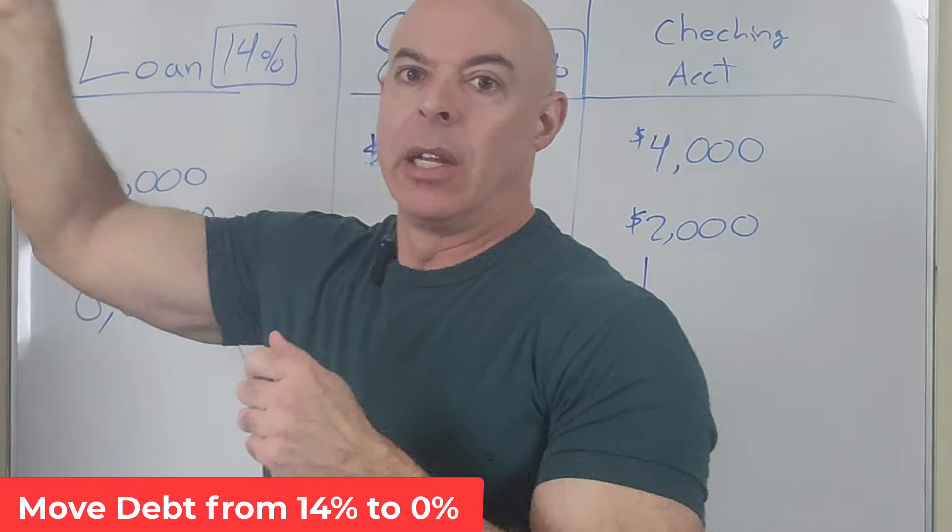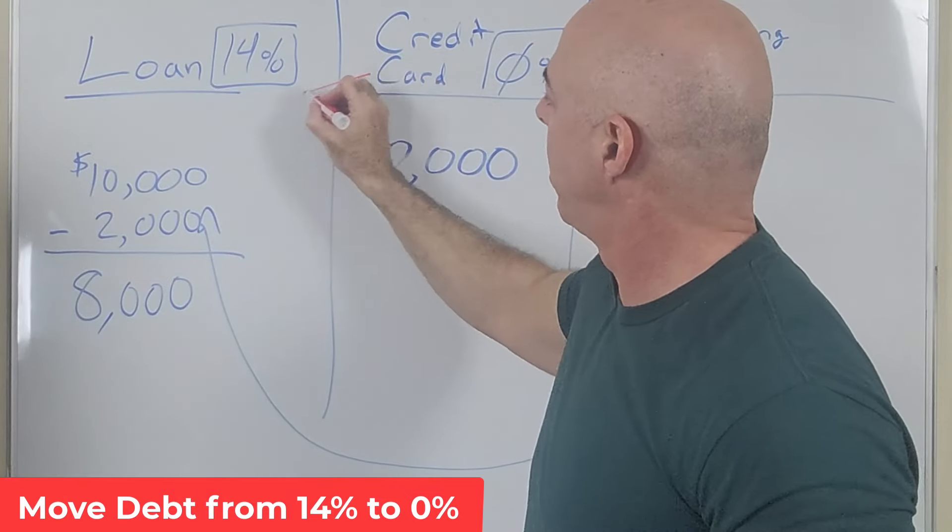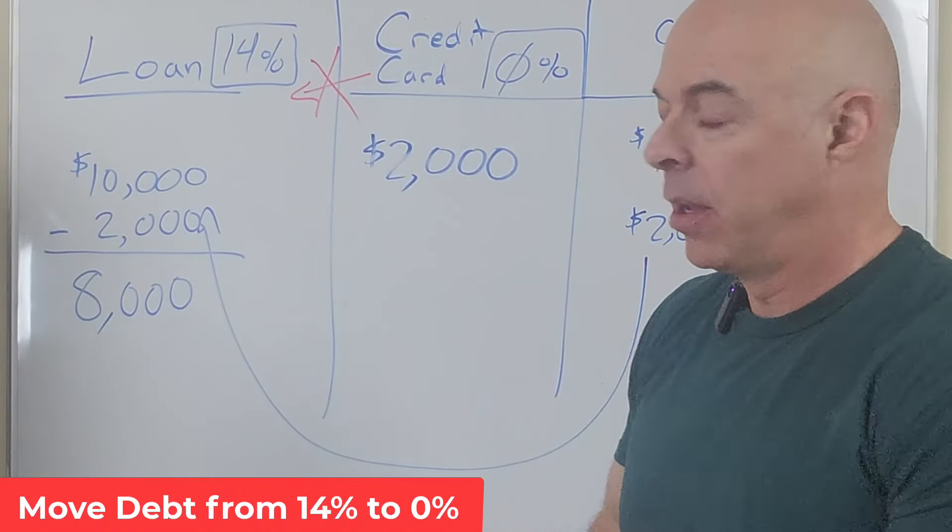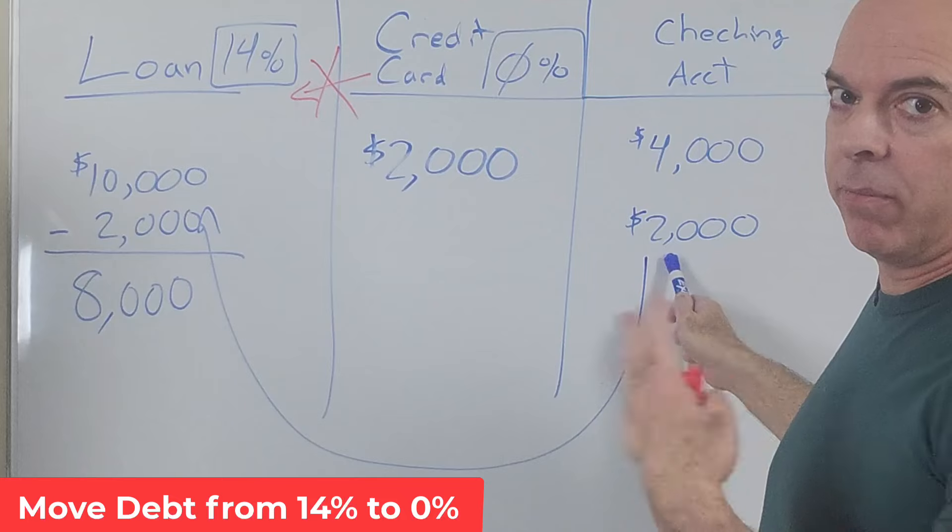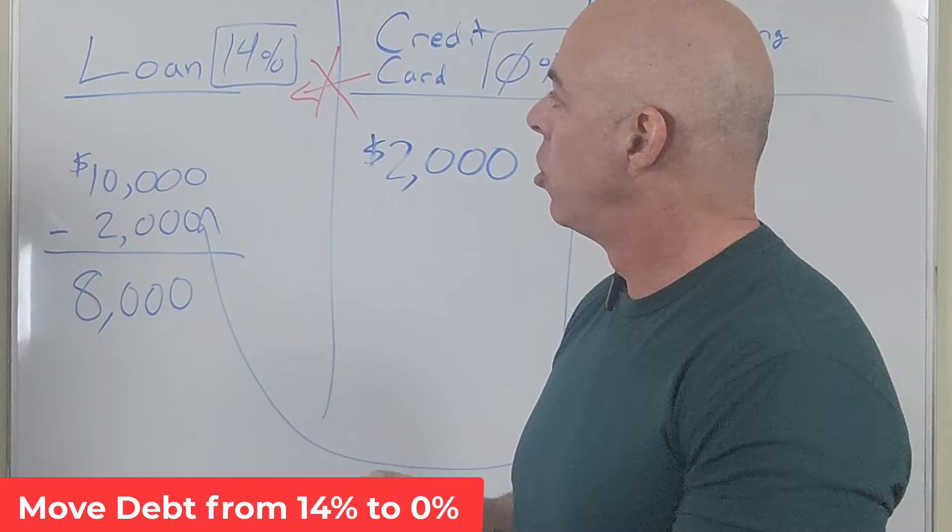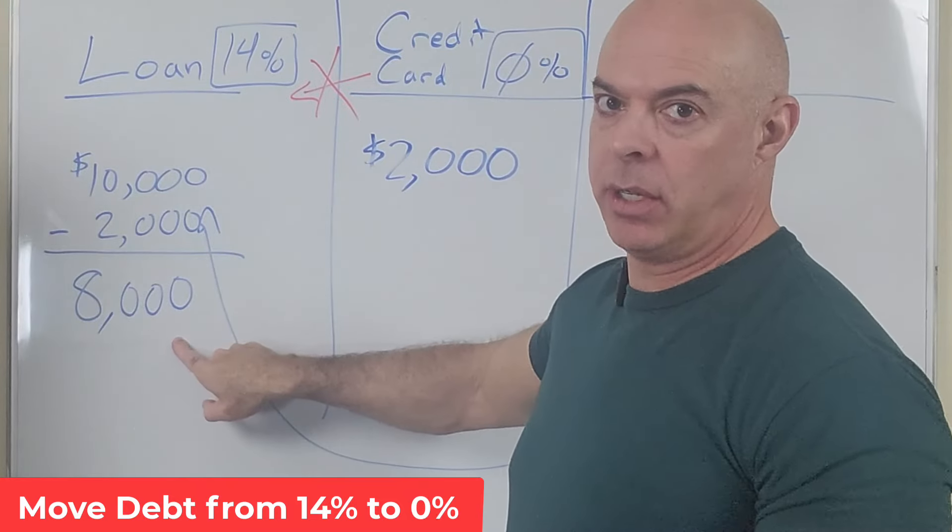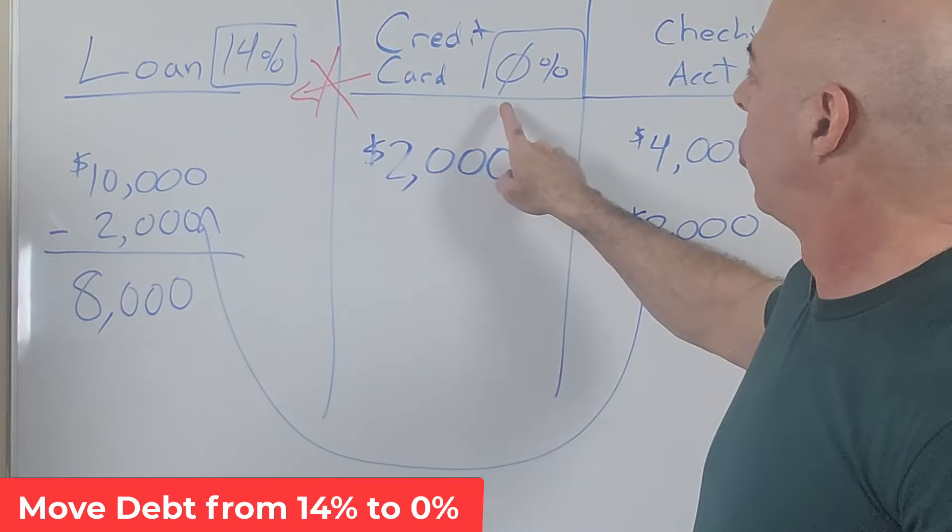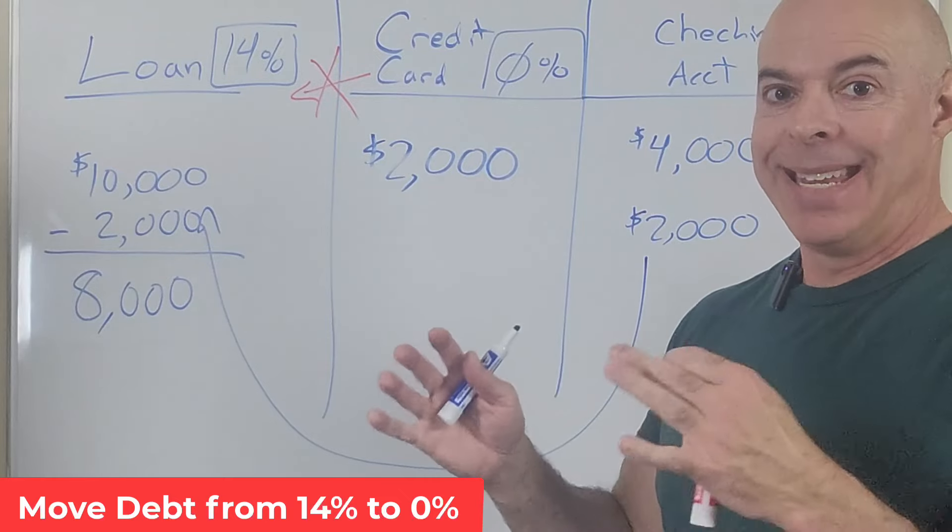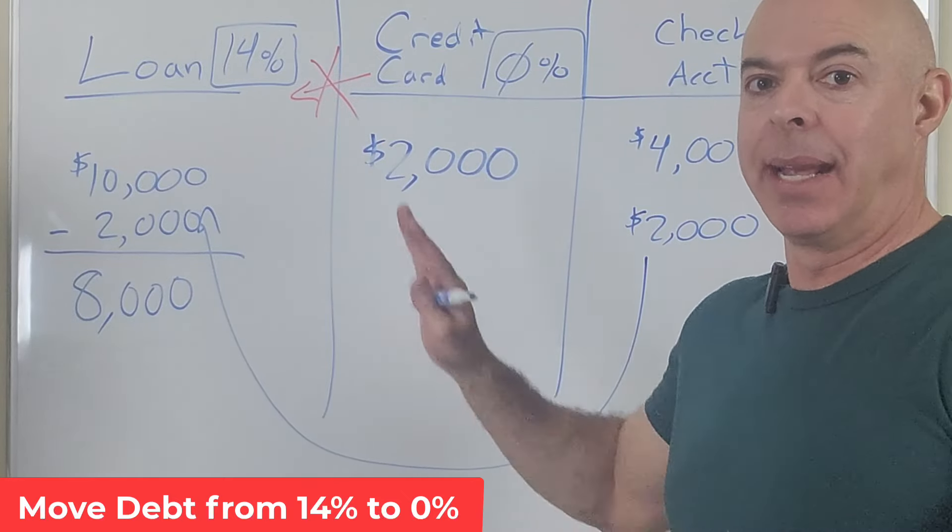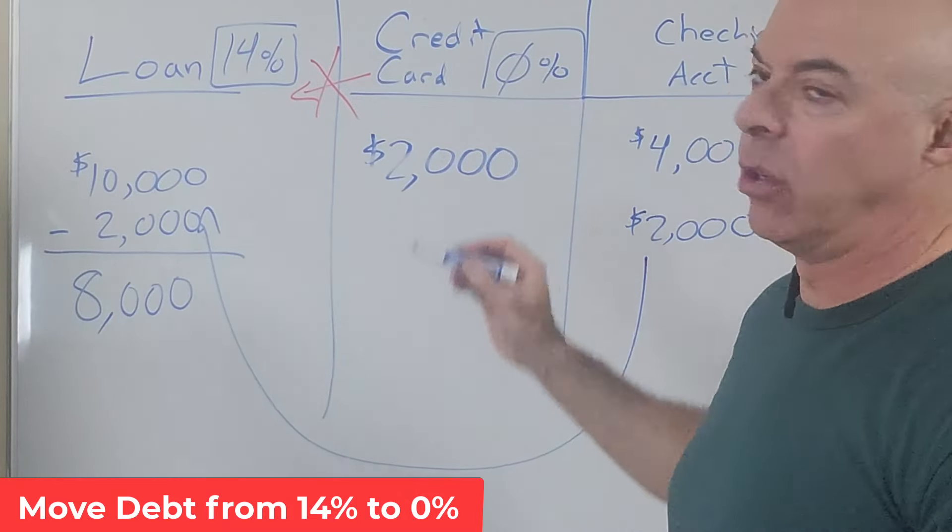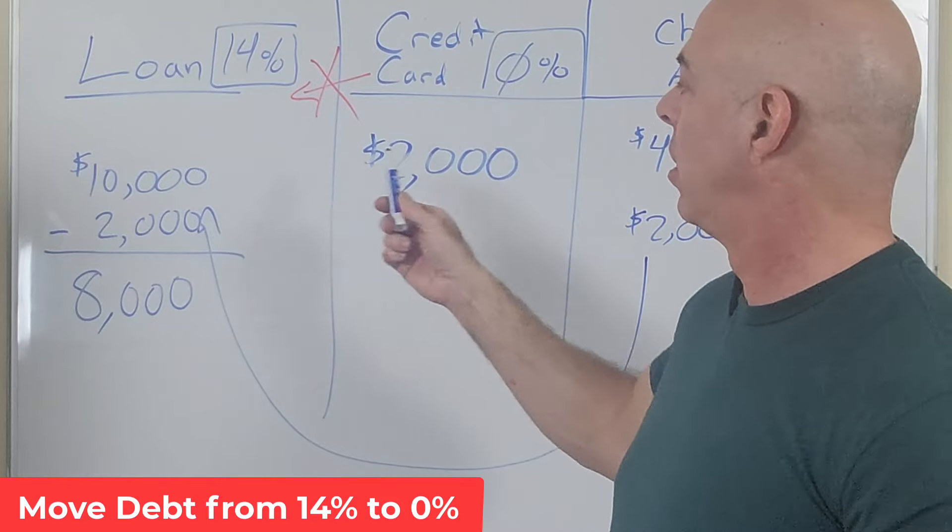Now you owe 8,000. Great, you just took 2,000, made a loan payment. Now you can't eat, you can't do all those things. No, you can. You charge all of those things on this credit card. So they will not allow you to make a credit card payment on your loan, that's a no-no. So what you do is you take 2,000 that you normally use for your expenses, you make a payment. And now at the end of this month, your balance on 14% is 8,000, your balance on 0% is 2,000.